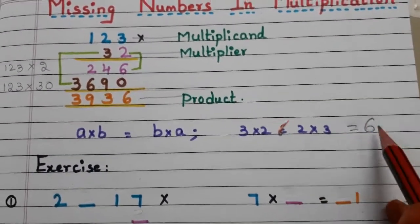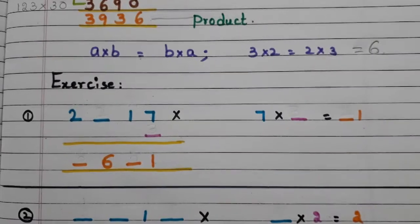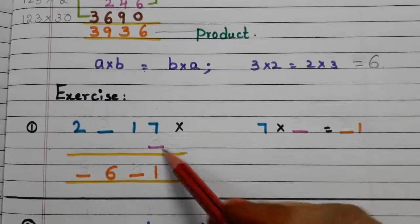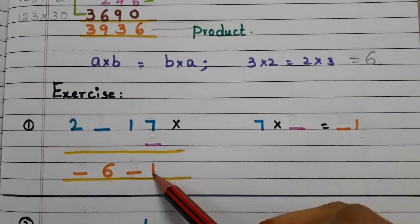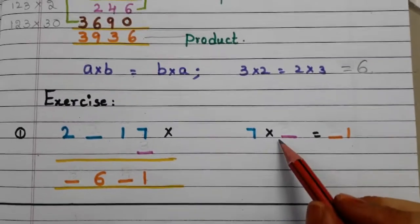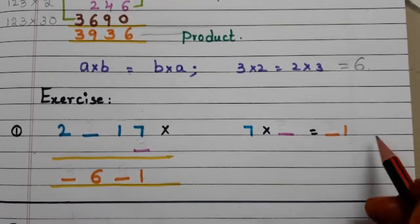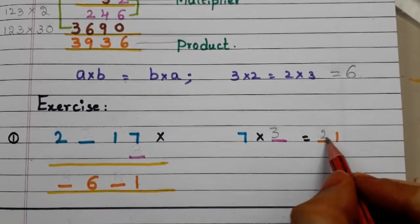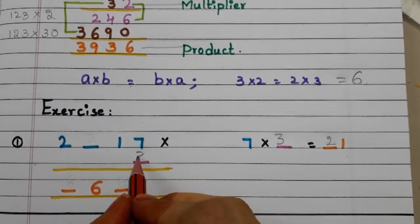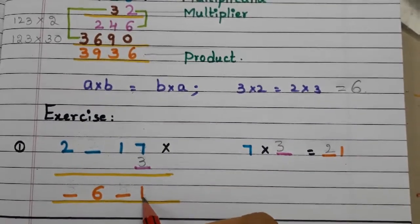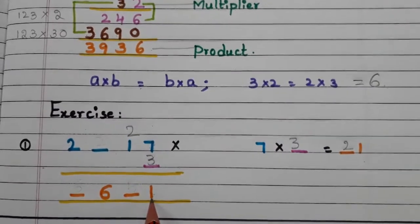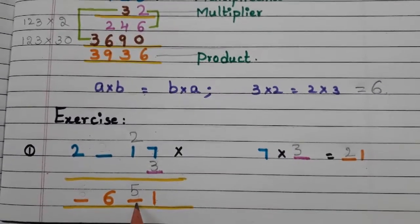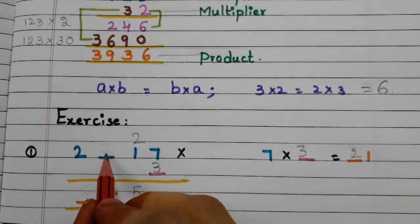Now let us do the exercise. Here we have to find the multiplier. 7 is there and the result has 1 in the units place. With what number do we multiply 7 to get 1 in the units place? 7 threes are 21, so the multiplier digit is 3. 7 × 3 = 21, 2 is the carry over. 3 ones are 3, plus 2 is 5. So the missing digit is 3 and the result is 5.